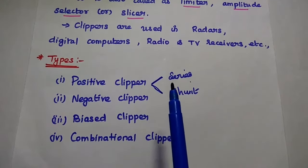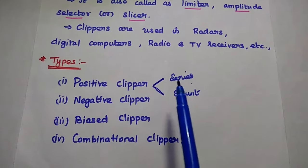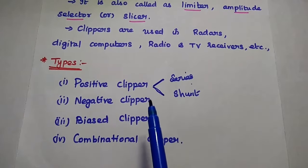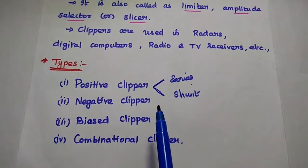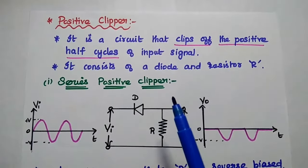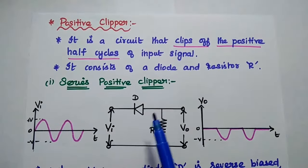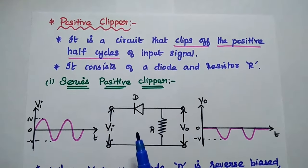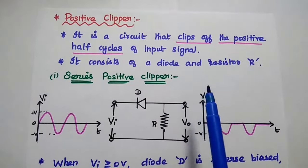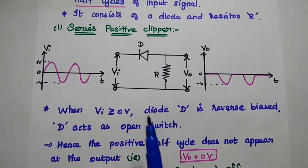Each type is further classified into two types: series positive clipper and shunt positive clipper. Similarly, series negative clipper and shunt negative clipper. The first one is the positive clipper. Here is the series positive clipper — in this, the diode is connected in series with the load.